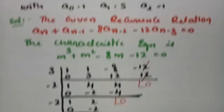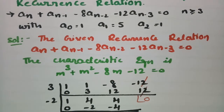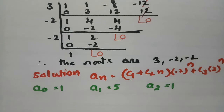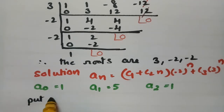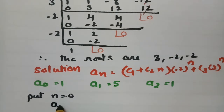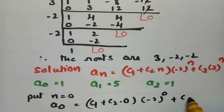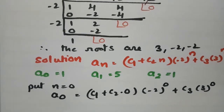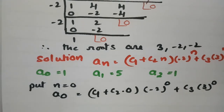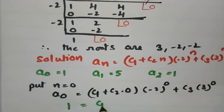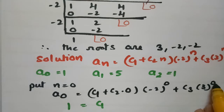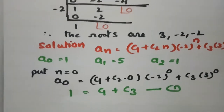Now the initial conditions are a_0 equal to 1, a_1 equal to 5, and a_2 equal to 1. We have to substitute all these values. Putting n equal to 0: a_0 equals c1 plus c2 times 0 times (minus 2)^0 plus c3 times 3^0. Since anything to the power 0 is 1, this gives c1 plus c3 is equal to 1. This is equation 1.